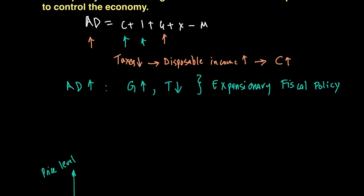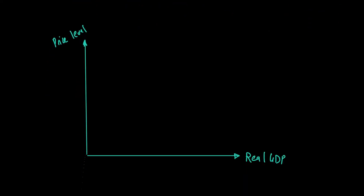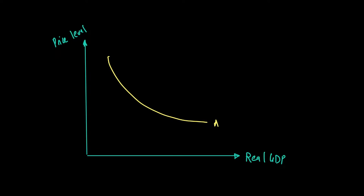Let's see expansionary fiscal policy in terms of a diagram. If our aggregate demand is currently AD naught and aggregate supply is AS naught, we are looking at our price level to be P naught, where real GDP is Y naught.